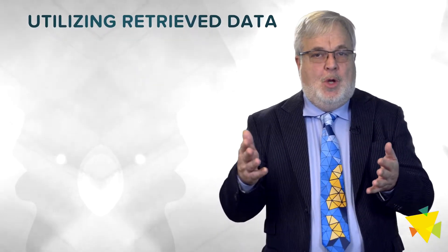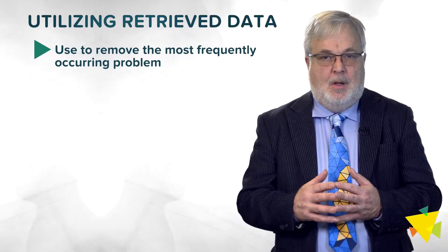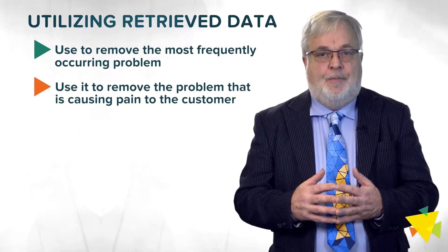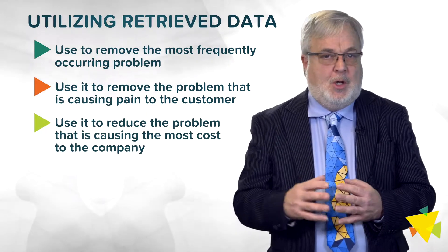As we mentioned previously, while providing good customer service often requires dealing with the symptoms of a problem, our approach to innovation is going beyond identifying them, but finding them and then removing the root cause of a problem, thus reducing the number of times that problem occurs. The data you retrieve can be used in three ways. First, you can use it to remove the most frequently occurring problem. Second, you can use it to remove the problem that is causing the most pain for the customer. And third, you can use it to reduce the problem that is causing the greatest cost to the company.